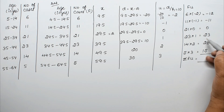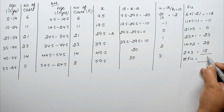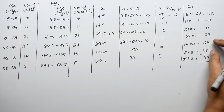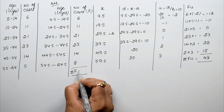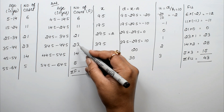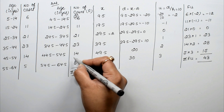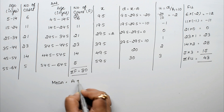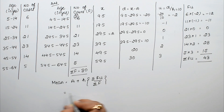Now we find sigma fu. The positive values are 23 + 28 + 15 = 66, and the negative values are −12 + (−11) = −23. So sigma fu = 66 − 23 = 43. The formula is: Mean = a + h × (sigma fu / sigma f), where a = 29.5, h = 10, sigma fu = 43, and sigma f = 80.